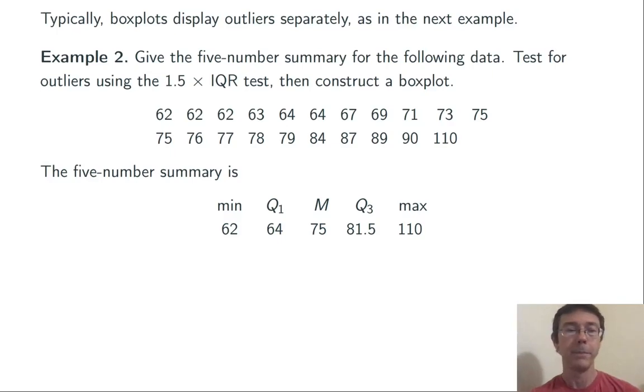Here's the five-number summary: 62, 64, 75, 81.5, and 110. The IQR is Q3 minus Q1. In this case, 17.5.